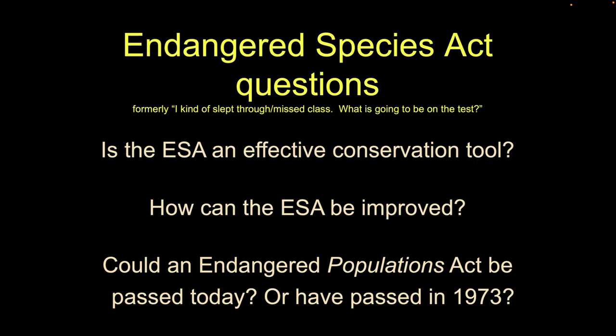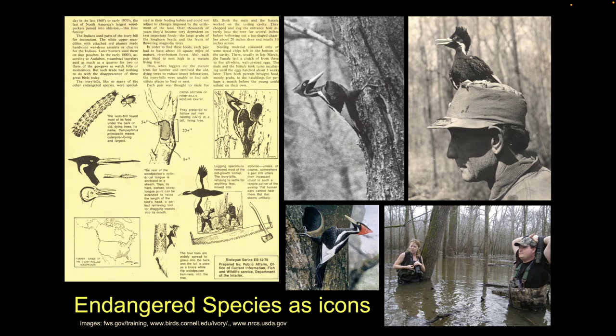We'll talk about a couple things here: is it an effective conservation tool, and some general ideas about how we can improve it. People like me always say we should probably have an Endangered Populations or Endangered Communities Act — that probably won't happen, but it would be nice. So let's talk about the context and background that produced the Endangered Species Act in the first place.